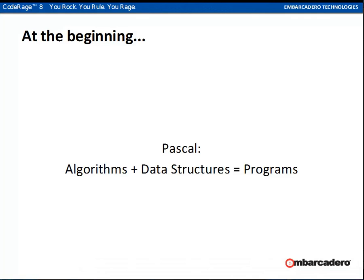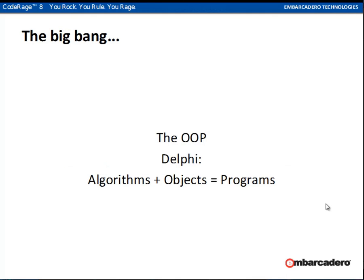As Delphi developers, we all know that at the beginning there was Pascal, and it was algorithms plus data structures equals programs. Then in the 90s came the Big Bang — object-oriented programming with Delphi — and it changed to algorithms plus objects now equal programs. Object-oriented programming revolutionized the way we define and work with data. We still, however, continue to write algorithms largely the same way as we were used to with structural programming.